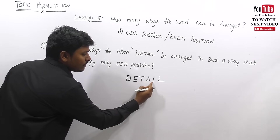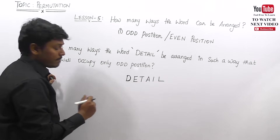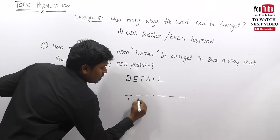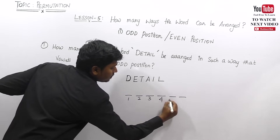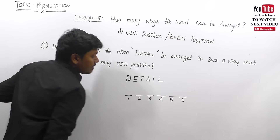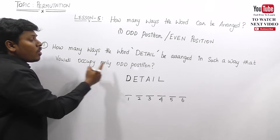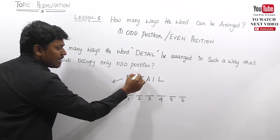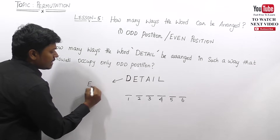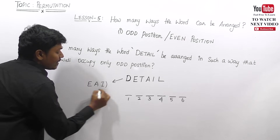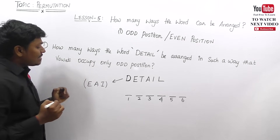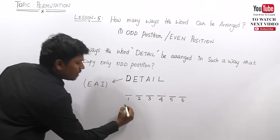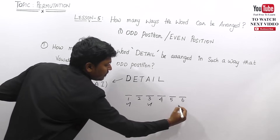There are six letters in the given word DETAIL, at positions one, two, three, four, five, six. The vowels should occupy the odd positions. The vowels are E, A, I — three vowels. The odd positions are one, three, and five.